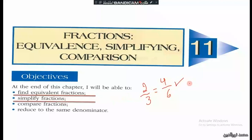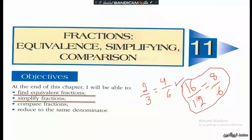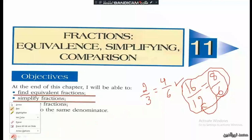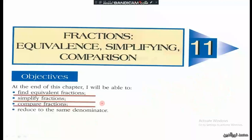The second objective is to simplify fractions. If we are given a fraction, we have to simplify it — simplify means to express a fraction in simpler terms. For example, 16 over 12 can be simplified to 8 over 6. 8 over 6 is a simplified form of 16 over 12.